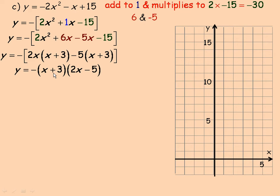Now we set each of those factors to 0 to find where the x-intercepts are. And so if I set x plus 3 to 0, we get negative 3 for an x-intercept. That's one of the two x-intercepts.